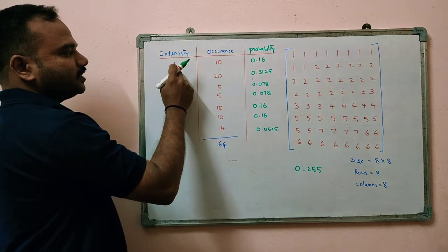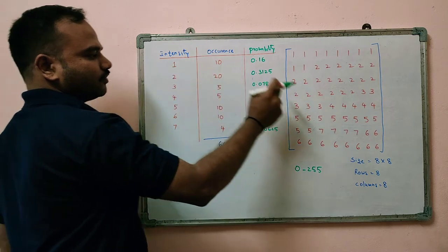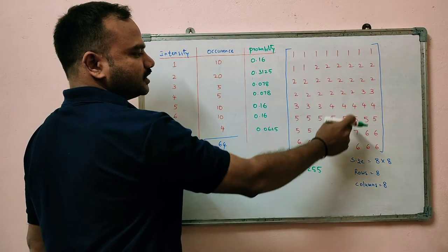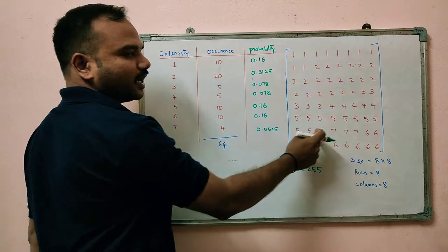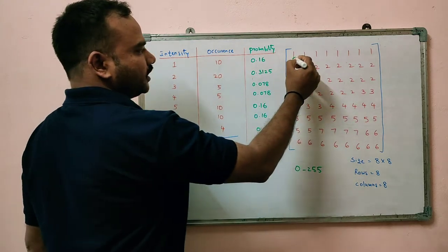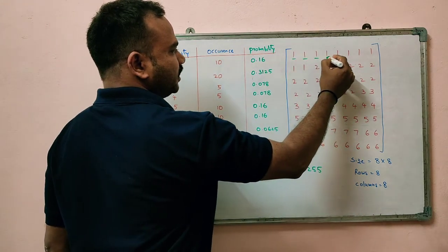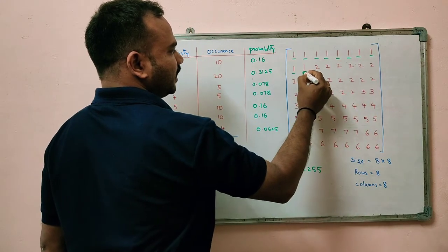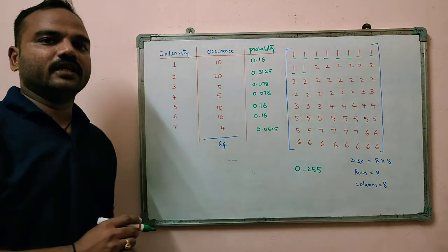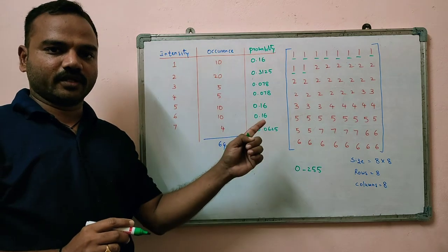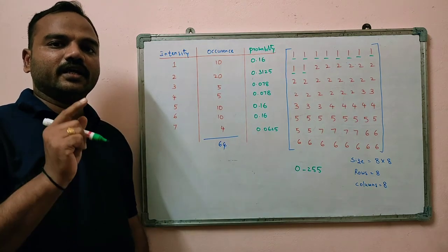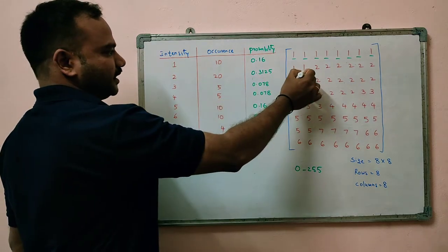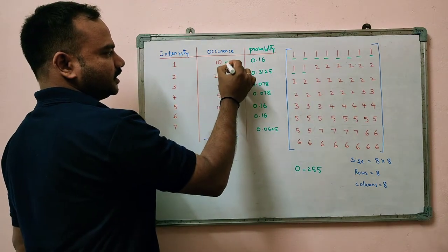Now we will see intensity value 1. From this sample image, count the number of pixels whose values are 1. So here it is 1, 2, 3, 4, 5, 6, 7, 8, 9 and 10. That is, in the considered image, we are having intensity value 1 for 10 pixels. So occurrence is 10.